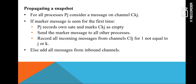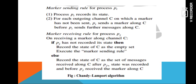Propagating the snapshot: for all processes Pj, consider a message on channel C_kj. It checks whether the marker message is seen for the first time or has been received a second or third time — that is, whether it has already recorded its state or not. If it has already recorded the state, it adds all messages from the inbound channels. If the state is not yet recorded, it records its own state and marks the channel as empty. Once it takes the snapshot, it sends the marker message to all other processes. After sending the marker message, it records all incoming messages, as in the marker sending rule.